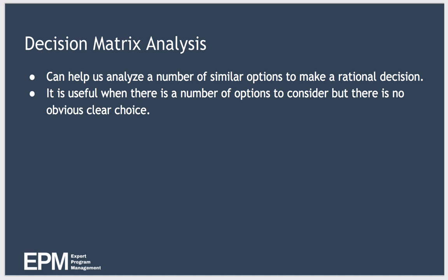Well, the answer to that is a decision matrix can help us. It's a very useful technique to use when there's a number of options to consider but there is no obvious clear choice. In this video we'll look at two types of decision matrices: a simple decision matrix and a weighted decision matrix. So let's start with the simple decision matrix.